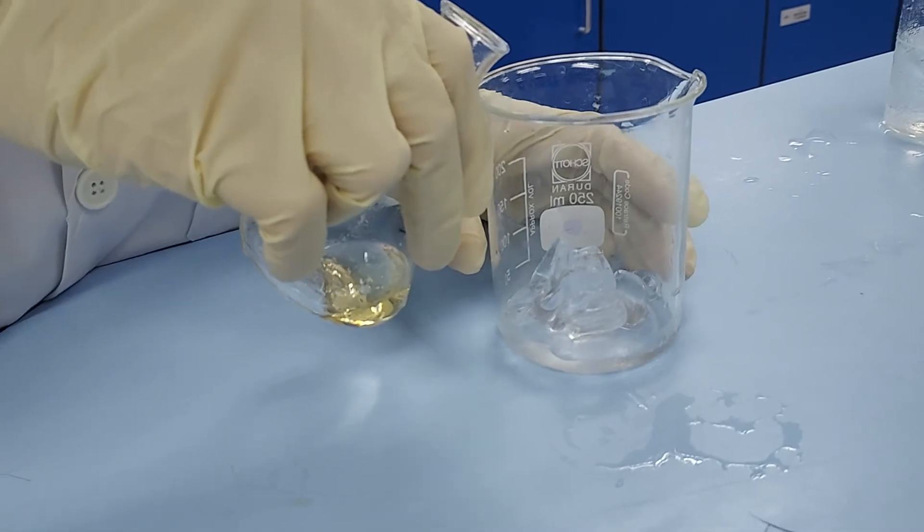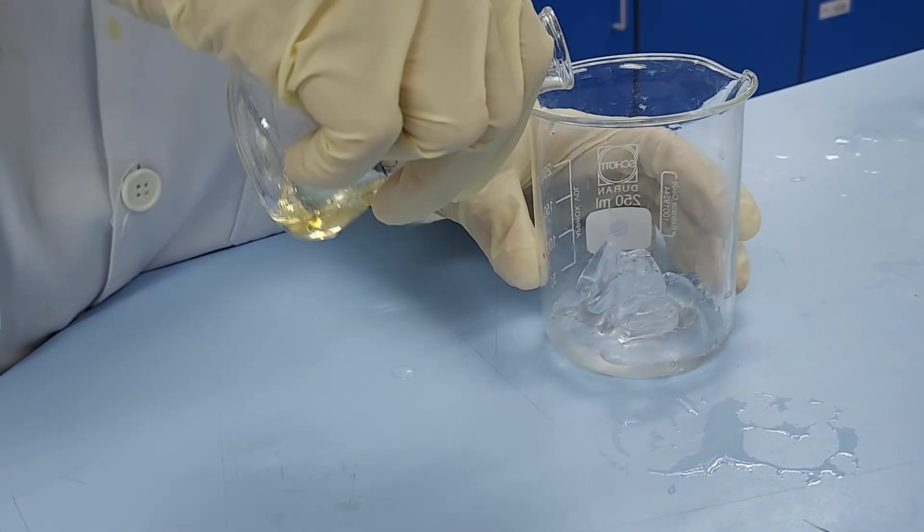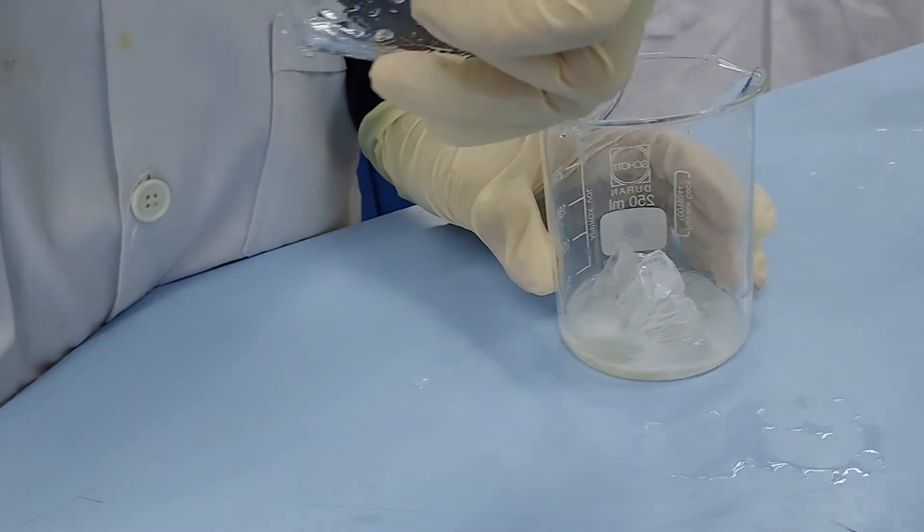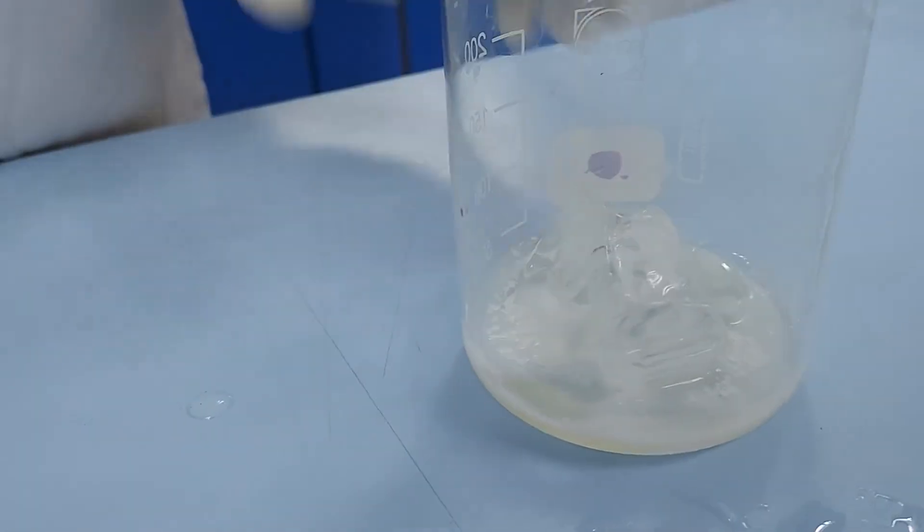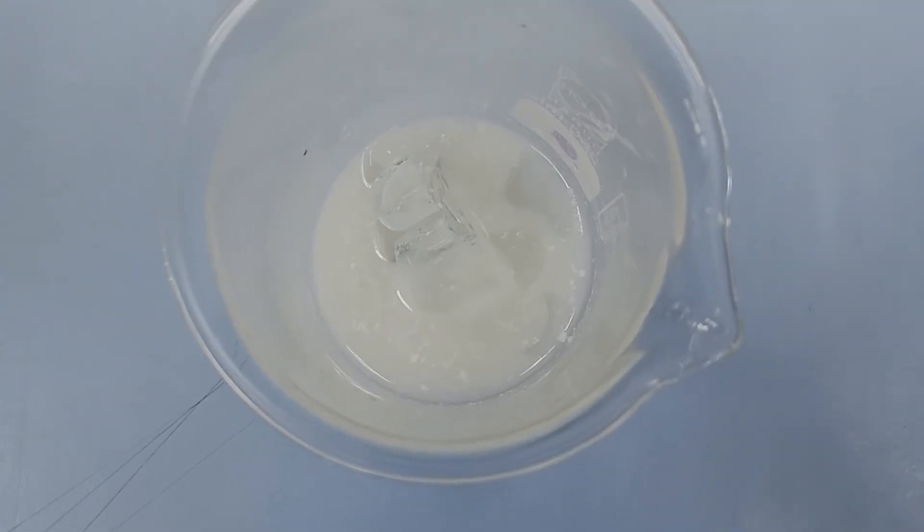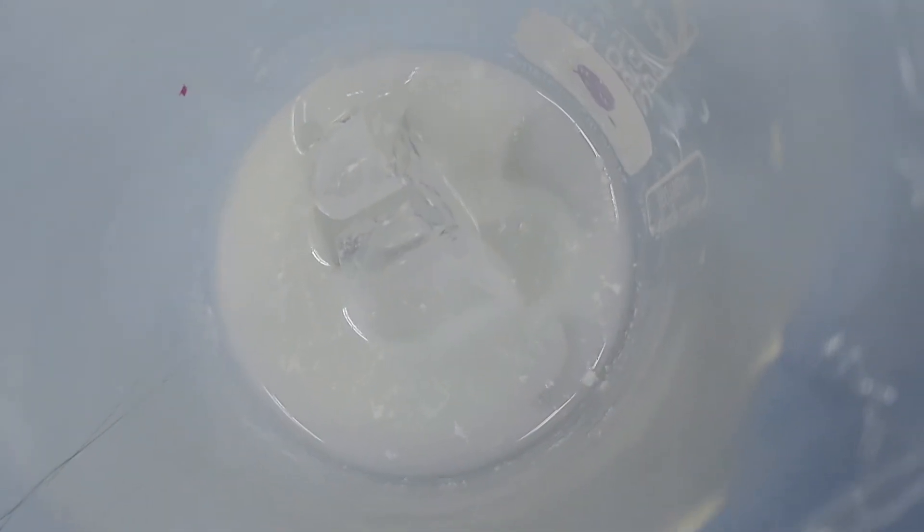Now we're going to pour the nitrated mixture on top of crushed ice. You can see crystals of our product forming around the ice. We're going to leave that until the ice has melted.